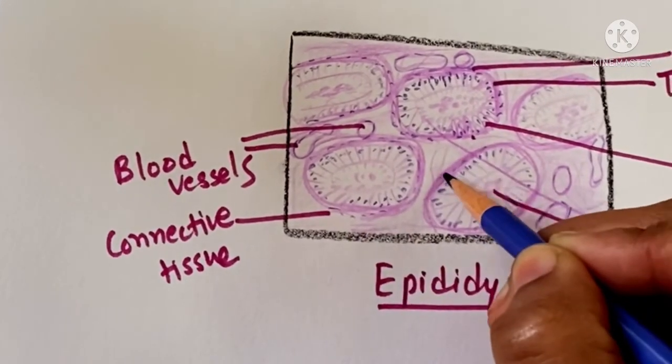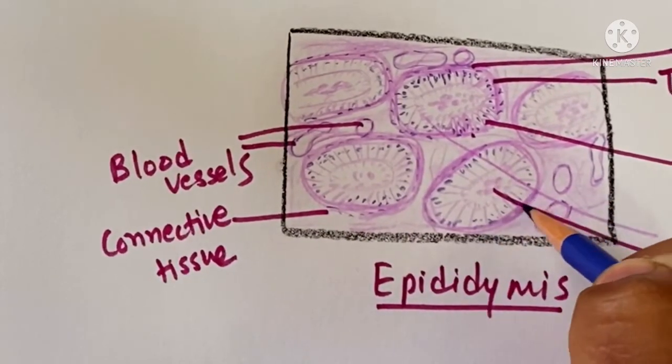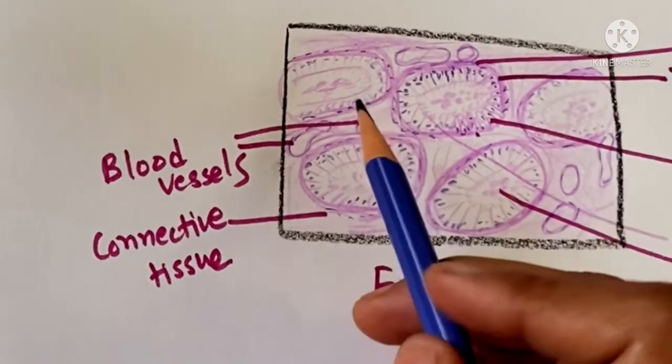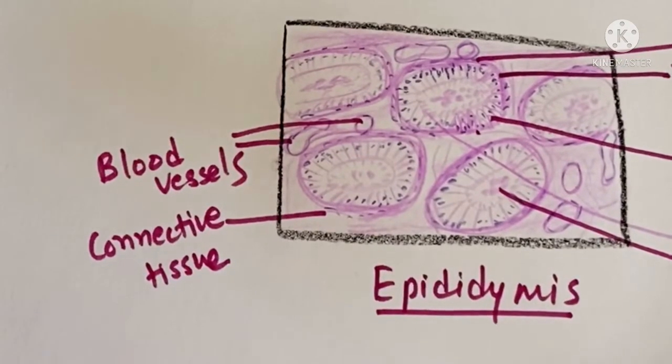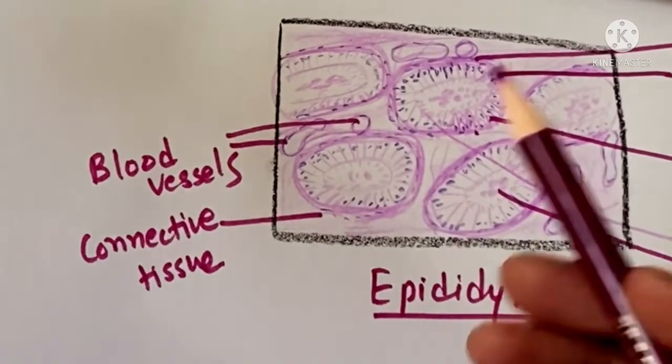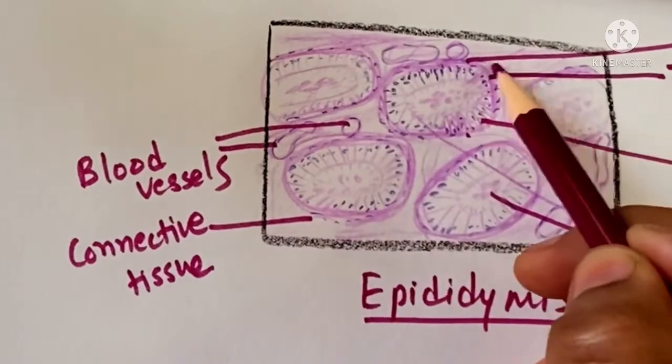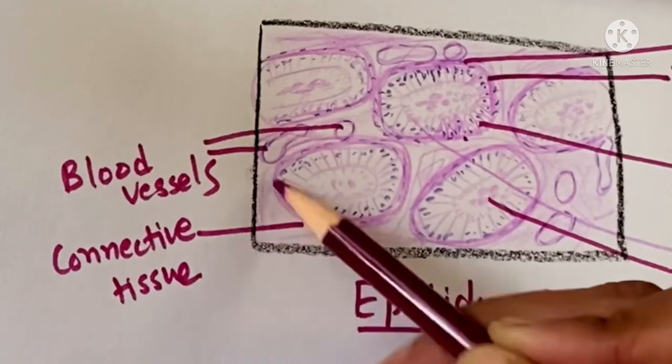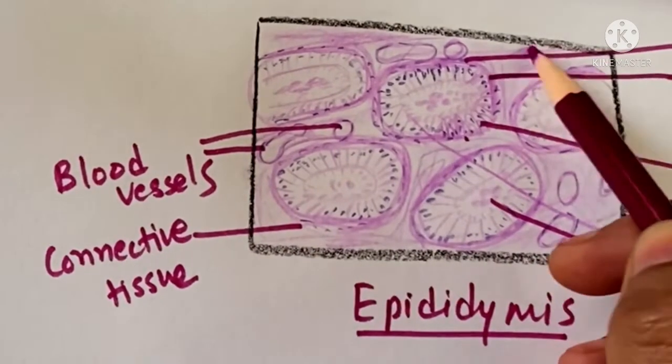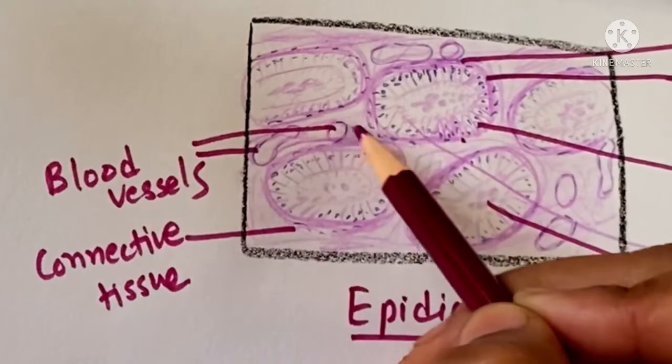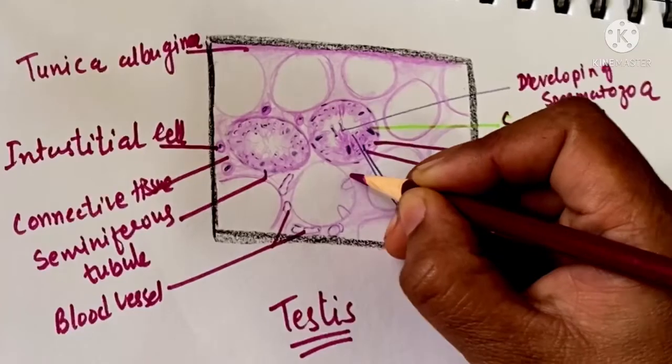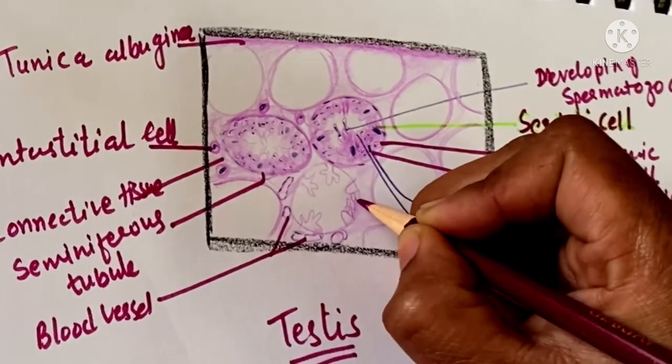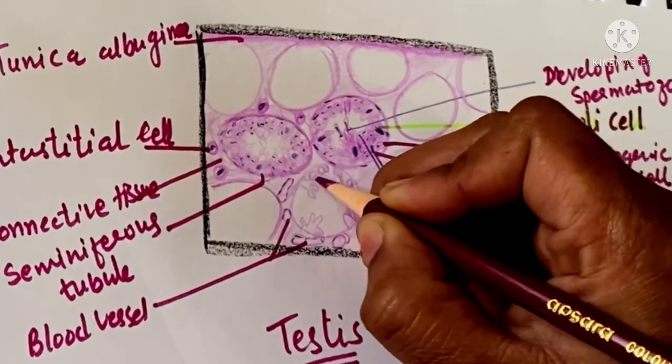While in testis, the seminiferous tubules have thin walls. The lumen is irregular and not clear; we cannot differentiate the lumen clearly. And the nucleus in the epithelium: we can see along the whole length of the epithelium there is presence of nucleus.